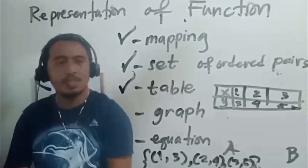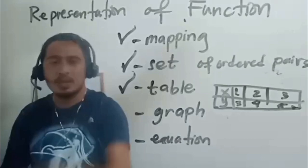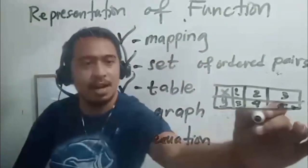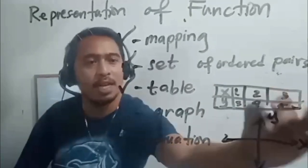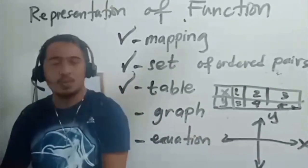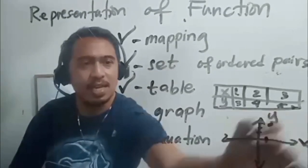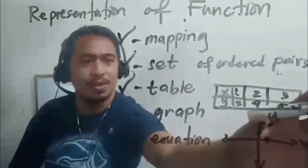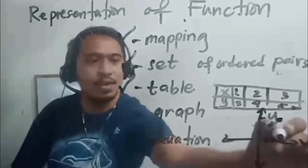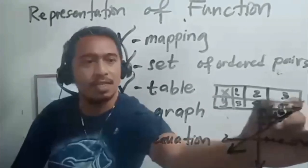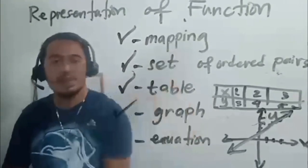Since we have the tabular representation, set of ordered pairs, and mapping, a function can also be represented using a graph — using the Cartesian coordinate plane, the x-y plane, or the R² plane. For example, plotting the points (1,3), (2,4), and (3,5). If we expand these points, you will get a line. It's a linear function. So it can also be represented using a graph.